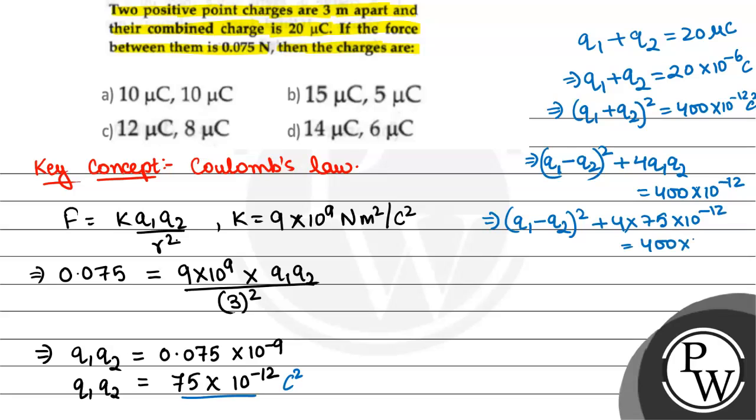From here, Q1 minus Q2 the whole square will be equal to 100 into 10 to the power minus 12. So Q1 minus Q2 will come out to be 10 into 10 to the power minus 6, which is 10 micro coulomb.